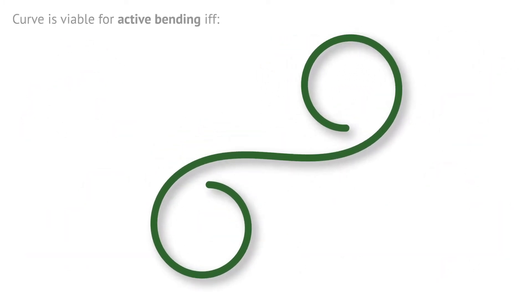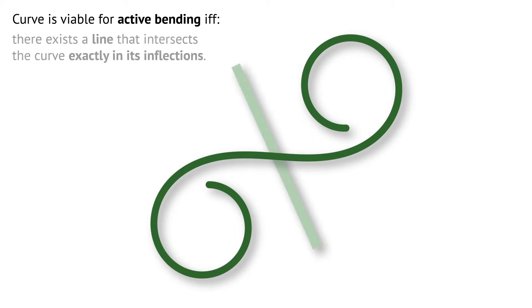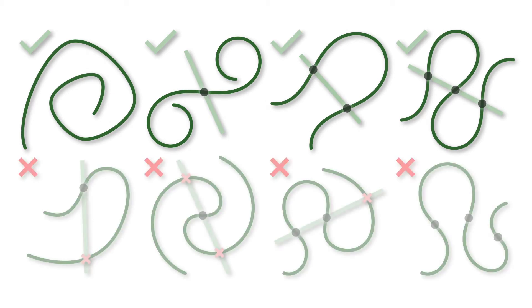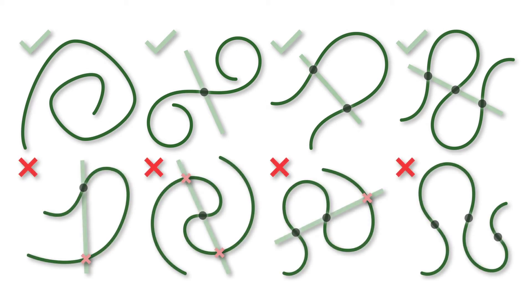But what shapes can be reproduced this way? In this work, we show that the design space is governed by a simple geometric rule: a plane curve can be attained as the equilibrium state of a slender beam if and only if there is a line that intersects the curve exactly in its inflection points and nowhere else. These are examples of curves that can be obtained by pure bending, and these are examples where this is provably impossible.